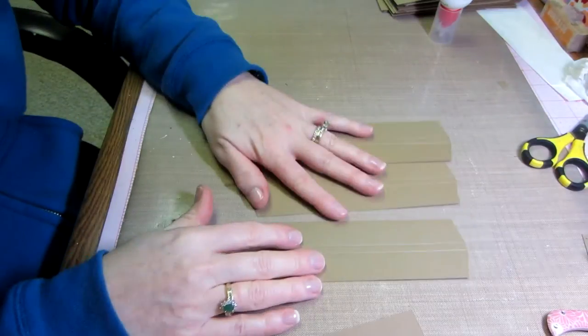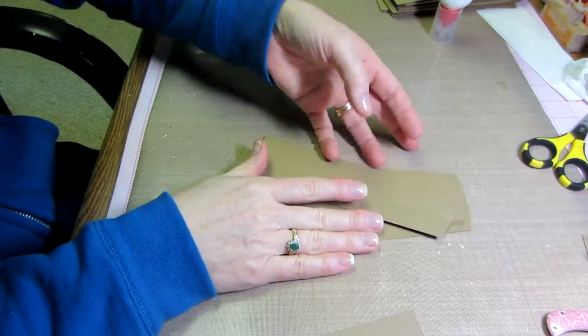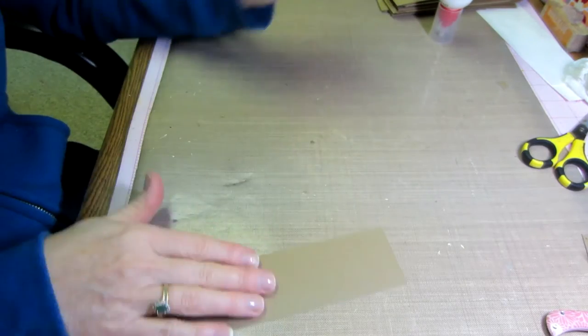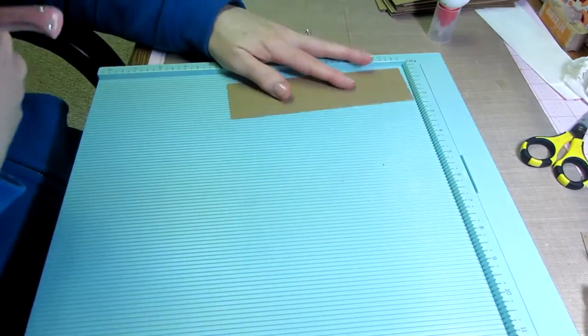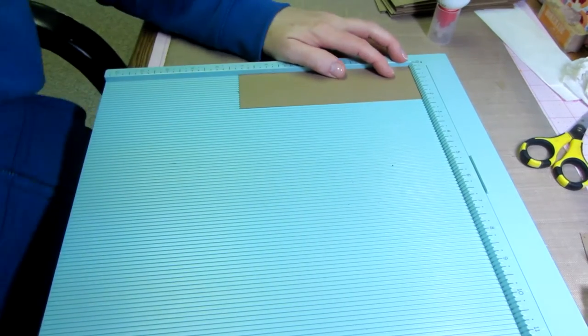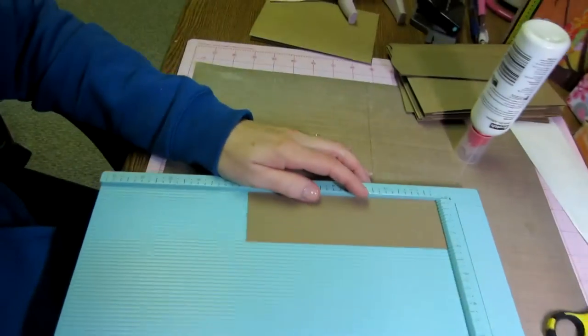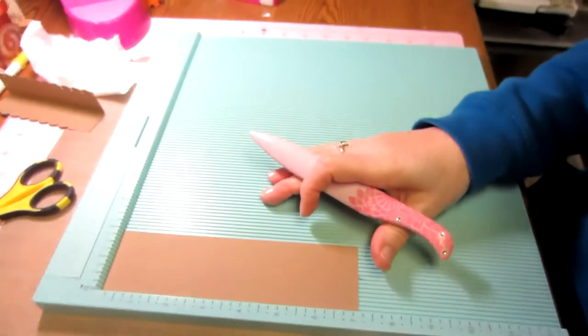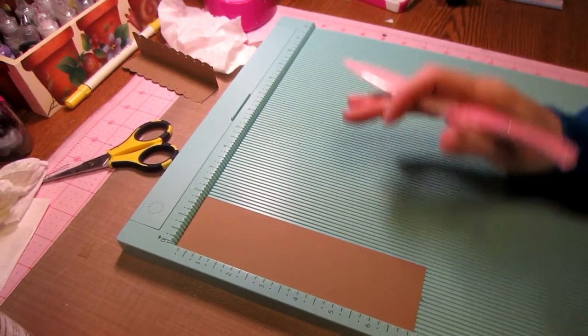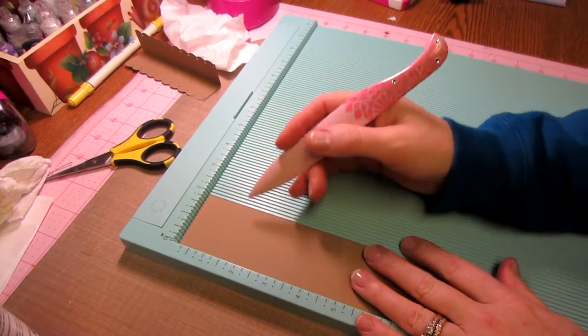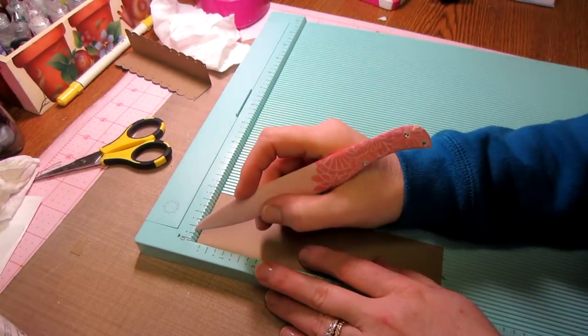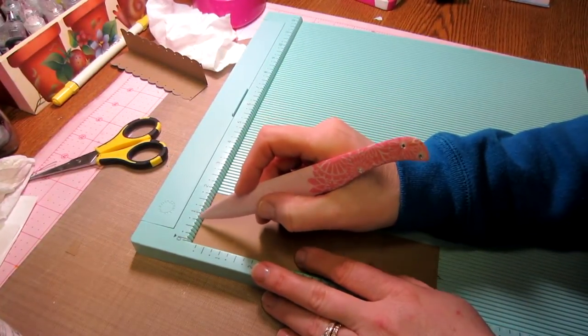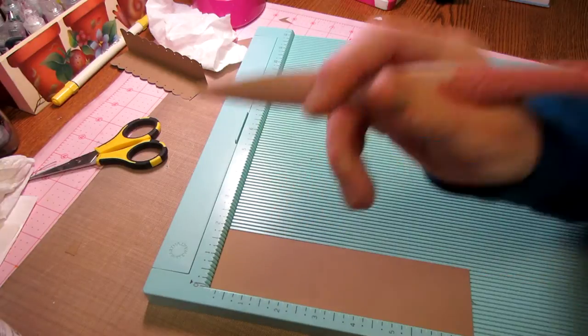I've already done three of them and I'm gonna go ahead and do the other one. Grab my scoreboard and I'm gonna score this. Let me see if I'm in the shot. Let me move this over here. We're gonna score it at seven eighths, so it's this little dash. I'm gonna go in a little bit.